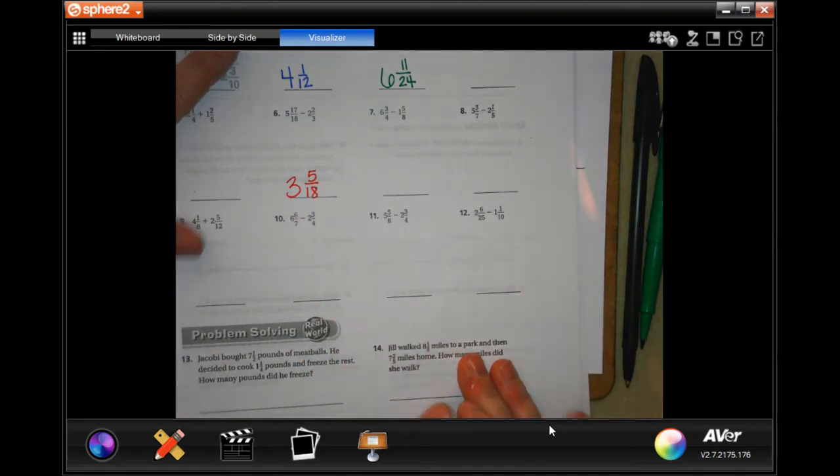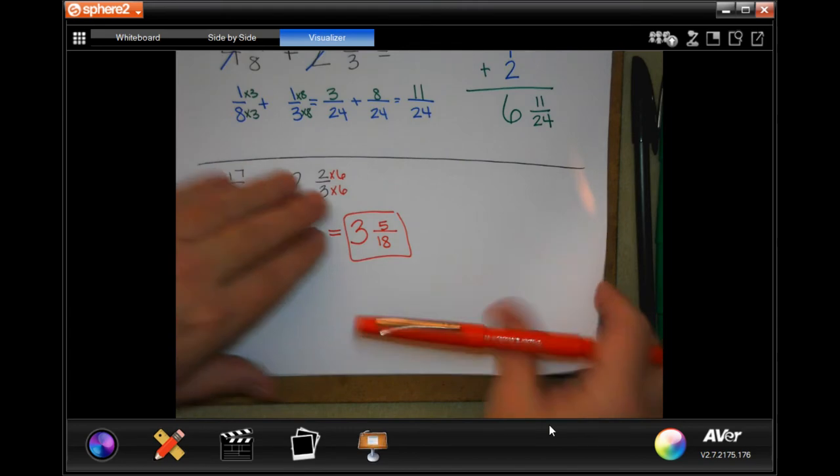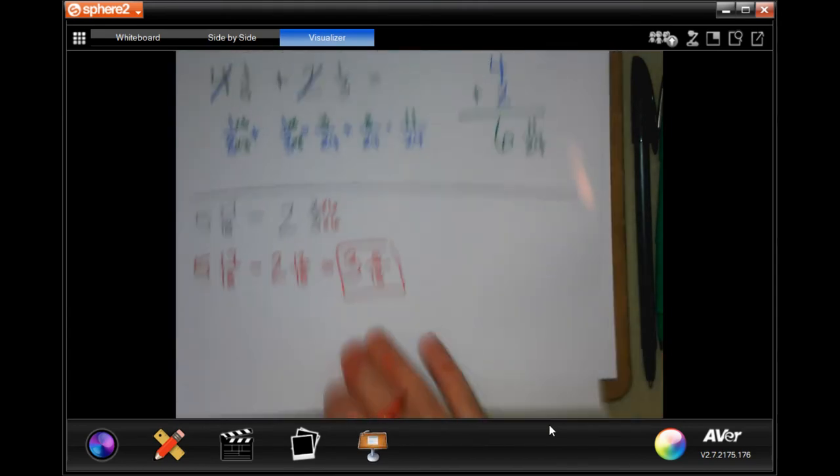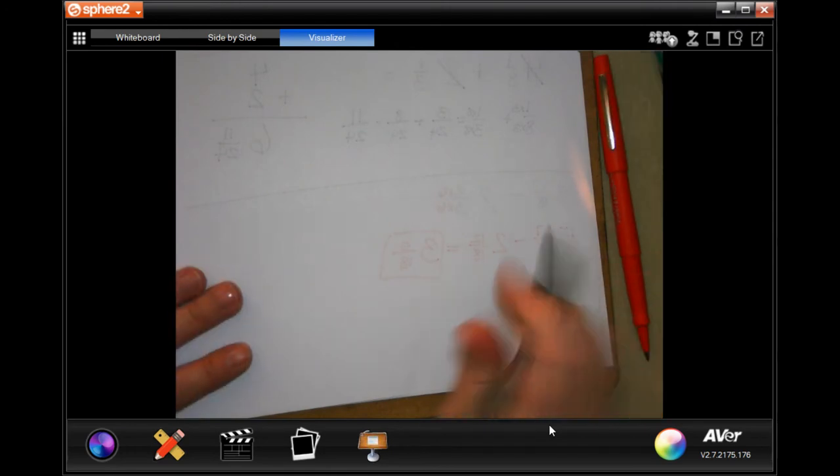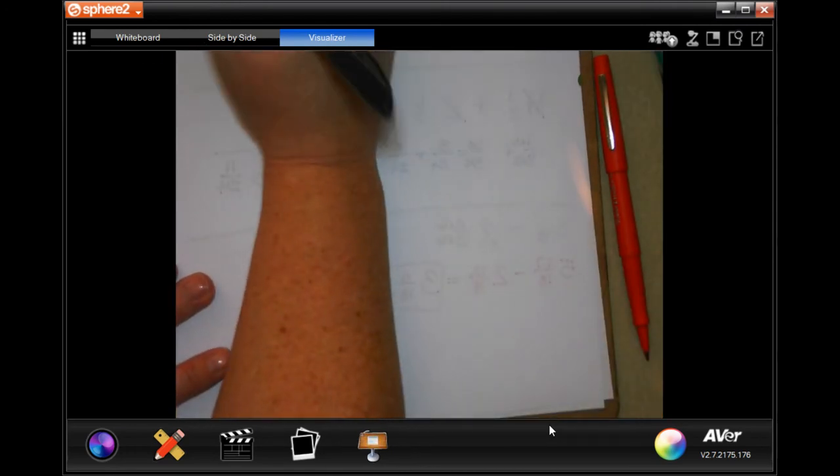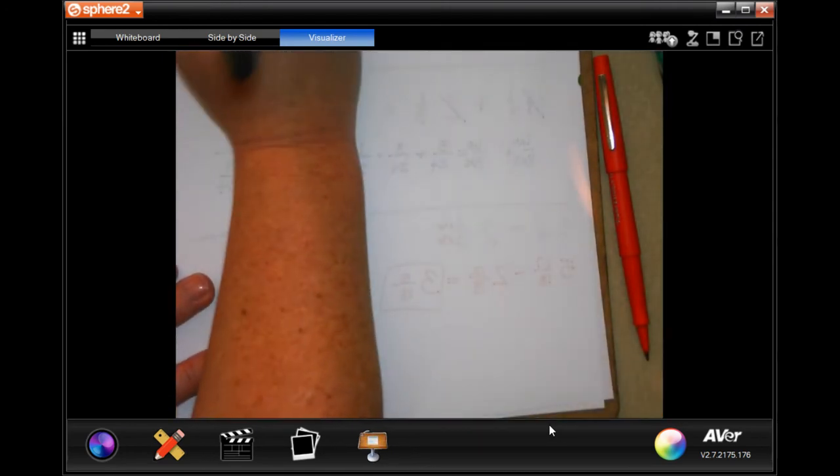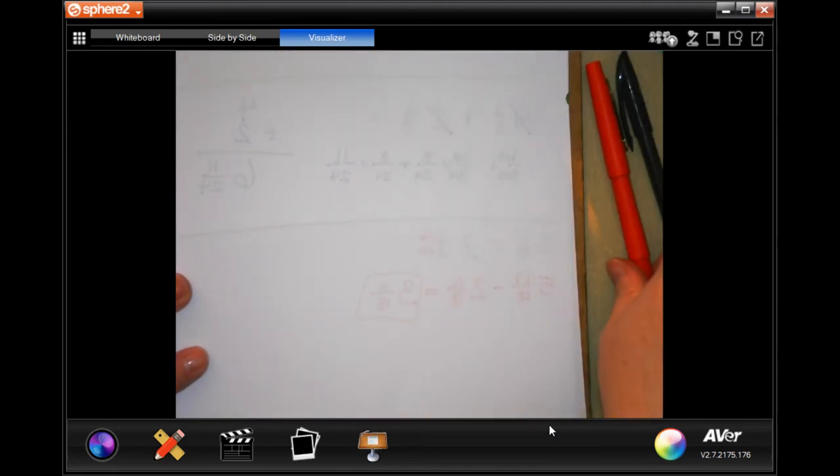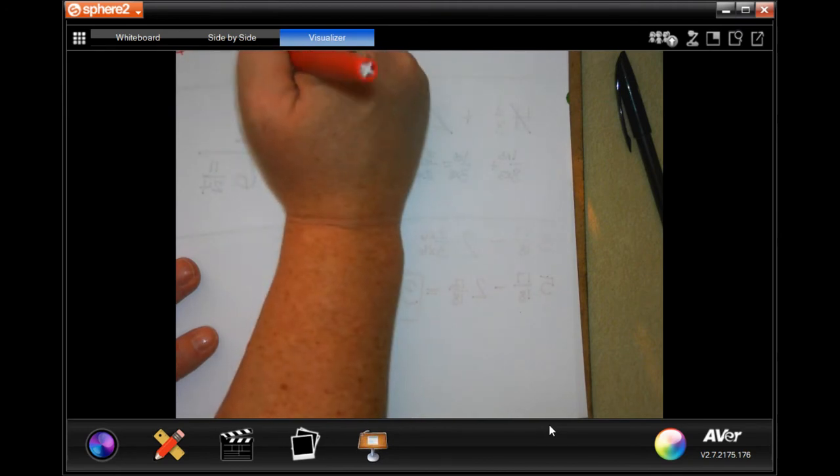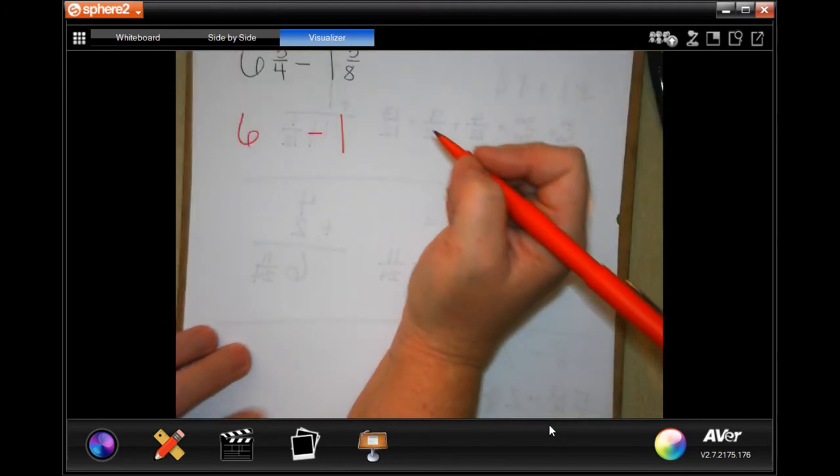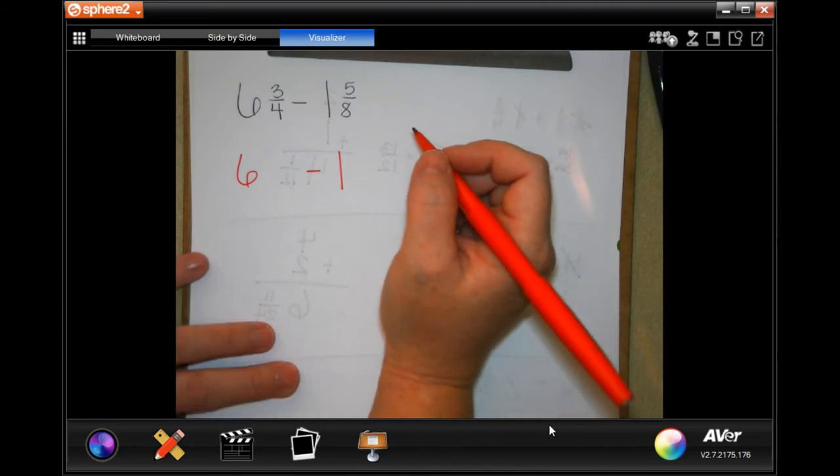We're going to do another one of those. Number 7 is 6 and 3/4 minus 1 and 5/8. Now rewrite your big numbers. Oops, sorry guys, you can't even see that.